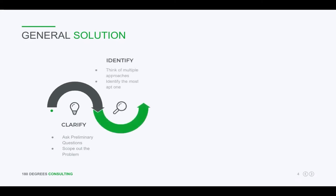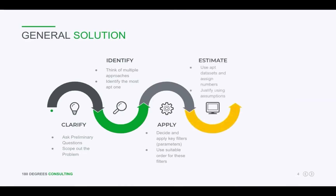The second step is to find out the different approaches — that is, the demand side or the supply side approach. The third is to apply certain parameters and filters, for example the urban-rural divide or the age divide. The fourth is to estimate — taking data sets, assigning them numbers, and using the right assumptions. The last step is a sanity check: if you used the demand side approach, use the supply side approach and match your answers. It doesn't have to be equal, but a close estimate indicates you've used the right approach.